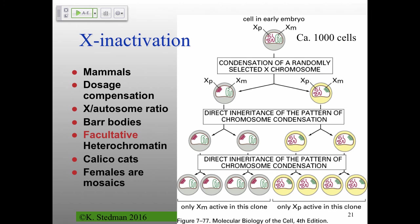X inactivation is pretty specific to mammals. Lots of sexual organisms have similar issues dealing with multiple copies of some chromosomes. The problem is that females have two copies of the X chromosome with many genes on them, while males only have a tiny Y chromosome. If you've got two active copies of the X chromosome, you end up with twice as much of many gene products.